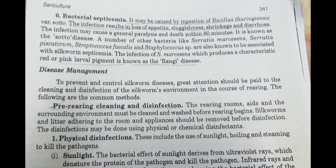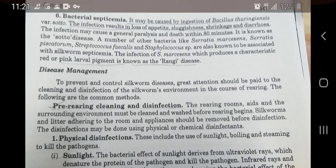A number of other bacteria can also infect silkworms, including Serratia marcescens, Serratia piscatorum, Streptococcus faecalis, and other Streptococcus species. Serratia marcescens produces red and pink larvae, known as the rungi disease. Management of these diseases will be covered in the next lecture.